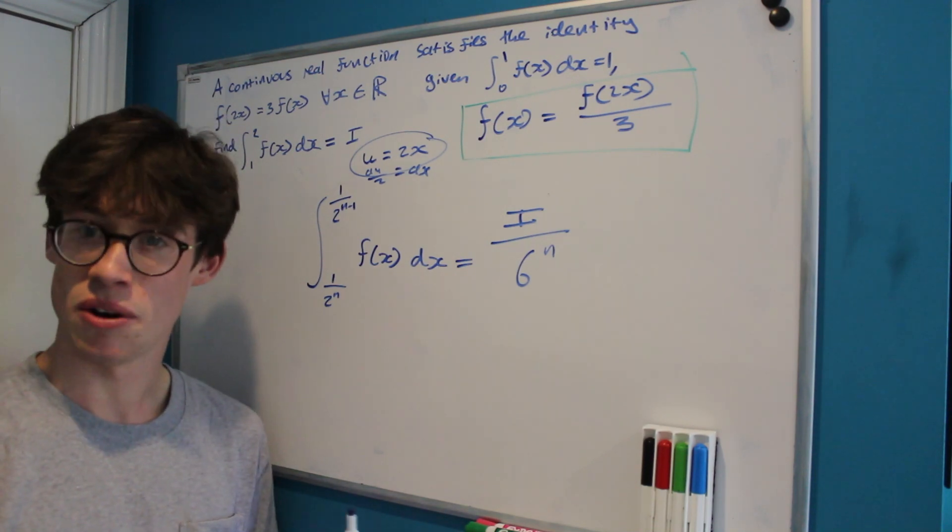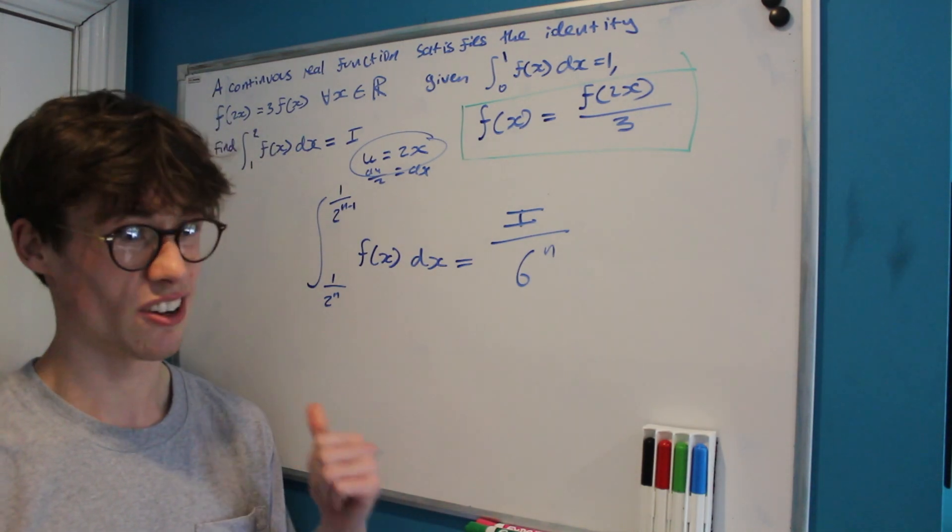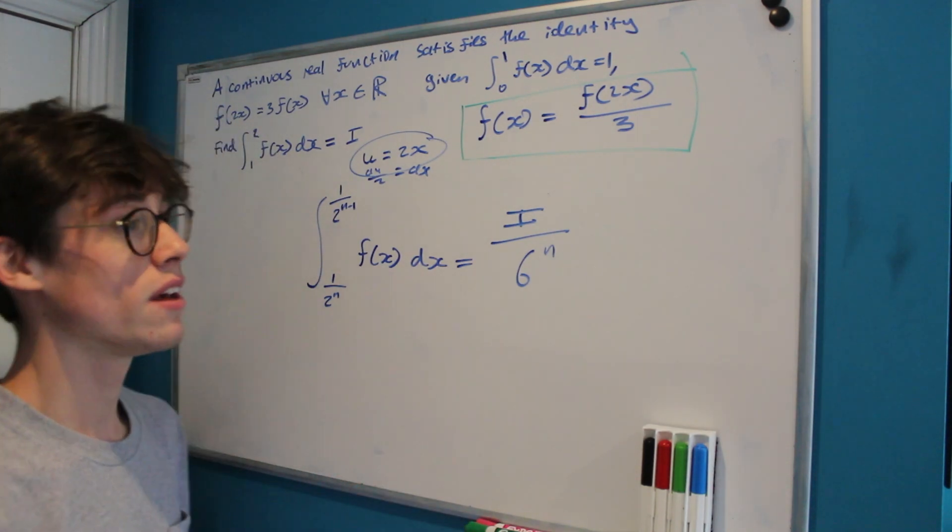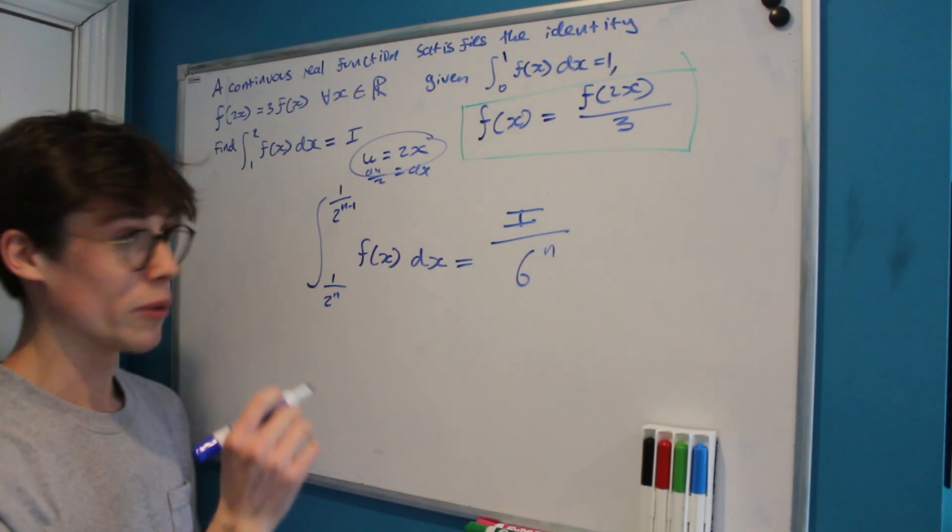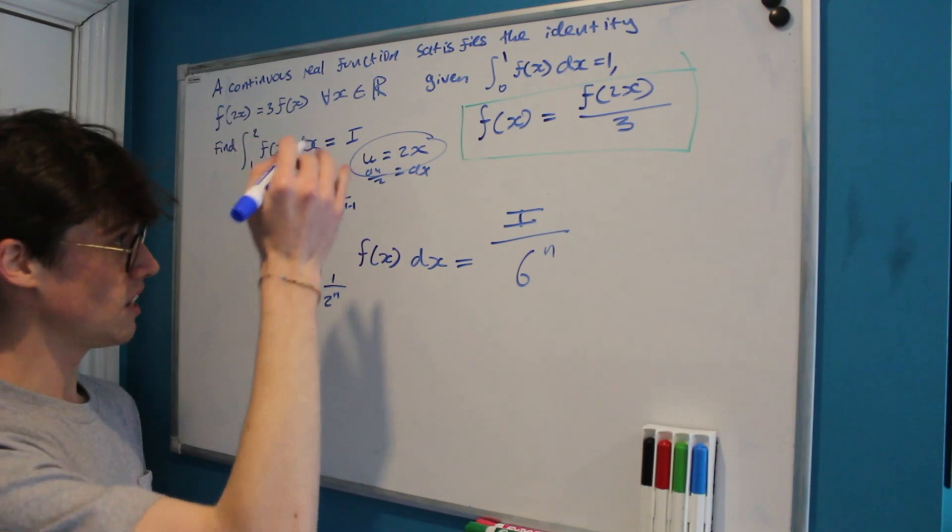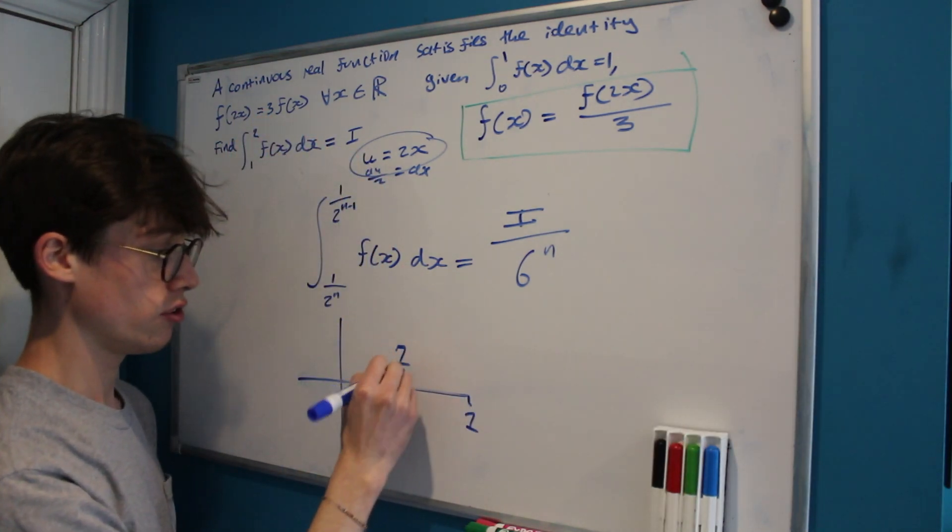And another thing that we've got to notice is a really nice fact about our bounds that actually is very similar to the last video on tricky integral problems that I made that involved the floor function. Let's have a look at what we're integrating between. Well, when n is equal to 1, we're going from 1 to a half. When n is equal to 2, we're going from a half to a quarter.